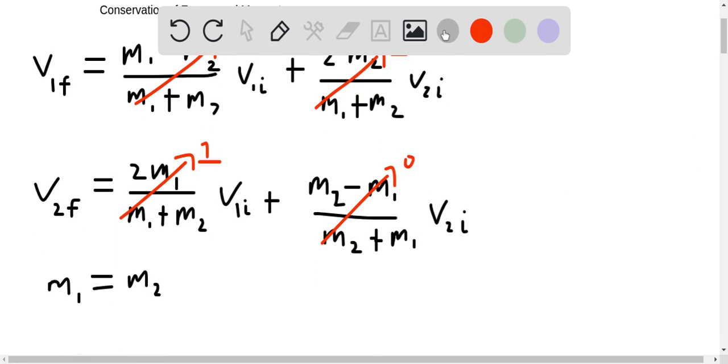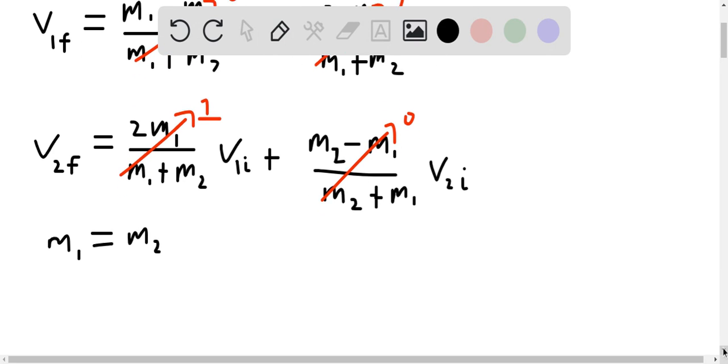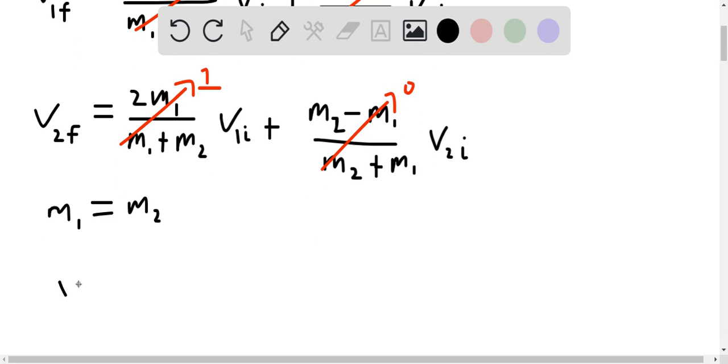What we have here is V1 final is equal to V2 initial, and V2 final is also equal to V2 initial. So we can say, because of this, V1 final equals V2 final is equal to V2.